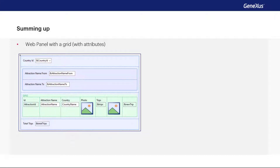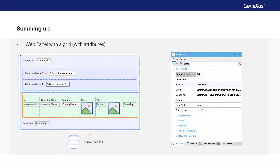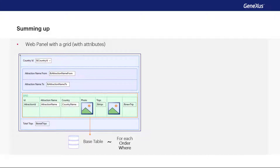Let's review what we have seen so far. For the case of a web panel with a grid with attributes, GeneXus will understand that the grid has an associated base table — a table to be navigated in order to load the grid lines. It will load a line for each record in that base table. To filter, we have the conditions property of the grid, and to sort, we have the order property. A grid with a base table is analogous to a for each. For the system events produced in web panels, we can program code to be executed when they are triggered. We saw three such events that are always triggered when a web panel is opened, that is, in the first execution.